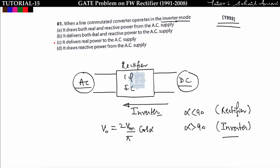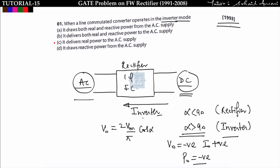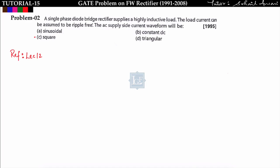In inverter mode, α > 90°, so V0 is negative and I0 is always positive, meaning output power P0 is negative — DC power is converted to AC power. Since there is no concept of reactive power in DC, the converter delivers only real power to the AC supply. So option C is correct.